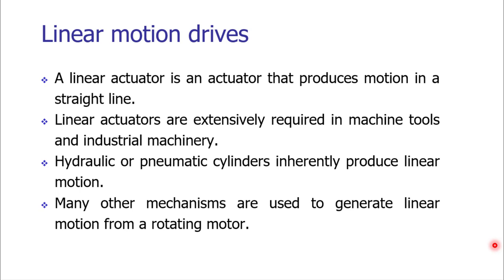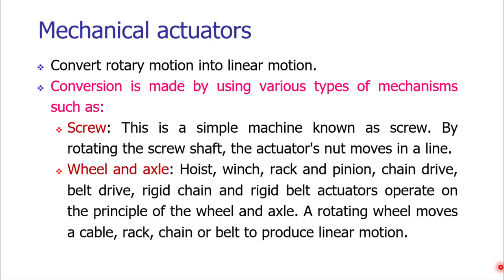Hydraulic cylinders and pneumatic cylinders produce linear motion. However, there are many other mechanisms that generate linear motion from rotating mechanical energy coming from electric motors. Mechanical actuators convert rotary motion into linear motion, and there are many ways to do this. A very basic mechanism is the screw mechanism — if we have a screw and nut arrangement and rotate the screw, there is translatory motion of the nut along the axial direction.